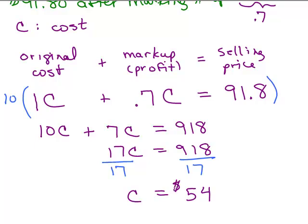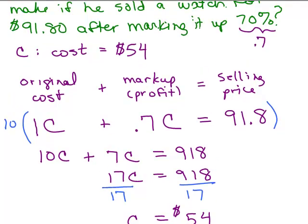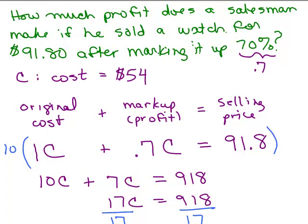So that was the cost, but that's not the question of the day. Let's go back up to the problem. How much profit does a salesman make if he sold a watch for $91.80 after marking it up 70 percent? First, let's make sure that that was the correct markup. In other words, let's check that 70 percent of 54, that markup, whatever that's going to be, when I add it, I get 91.80.